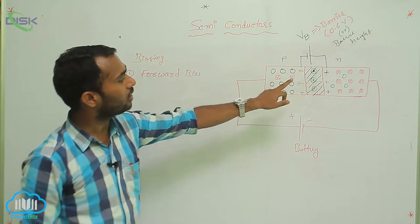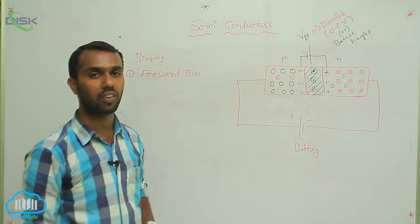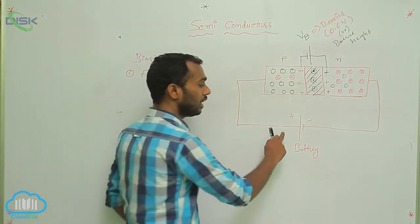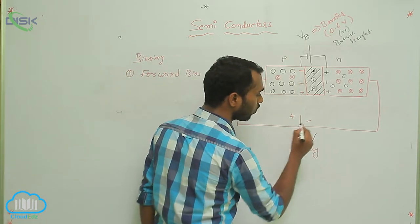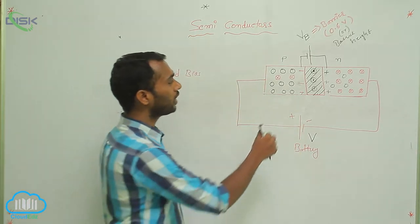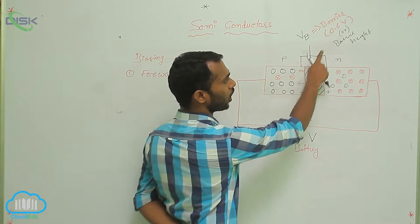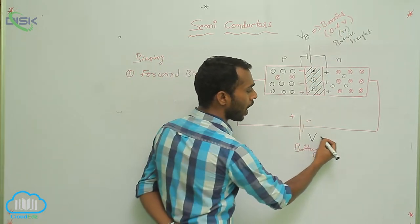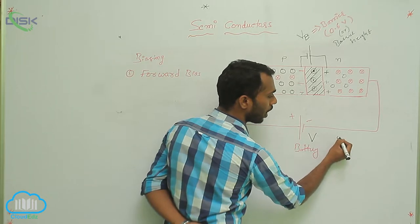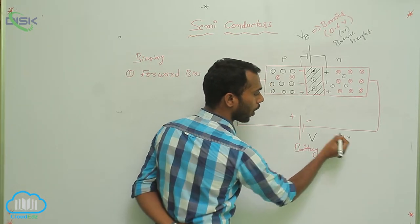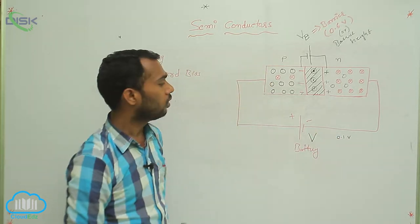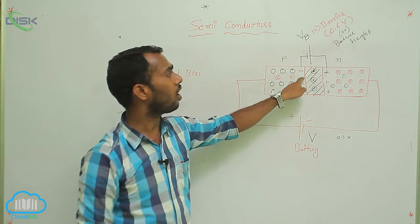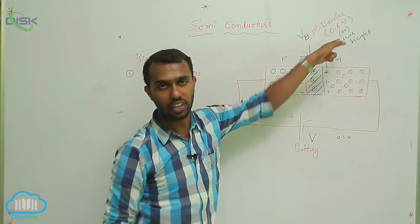If we connect a P-N junction diode in forward bias, what happens? The battery has some potential initially. What is the barrier potential value? 0.6, for example. Here I am applying this battery voltage as 0.1 volts. This 0.1 volts does not change the P-N junction because already we have 0.6 volts there.